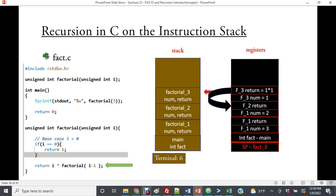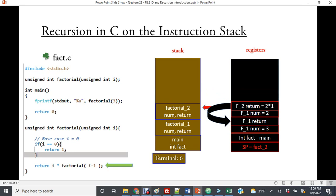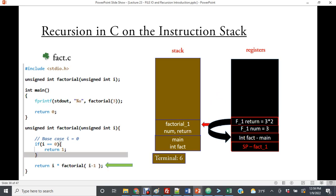That will return 1. When we get here, we see that i is 2, so it becomes 2 times 1. And this becomes 3 times 2.